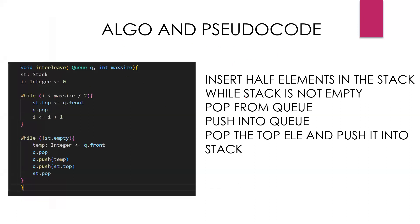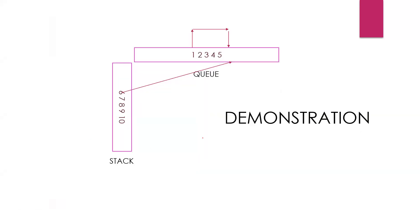First, we have to insert the first half elements into the stack, as we can see here. Then we have to perform a series of steps: while the stack is not empty, we will first dequeue from the queue and enqueue it back into the queue itself, then pop from the stack and push it into the queue.